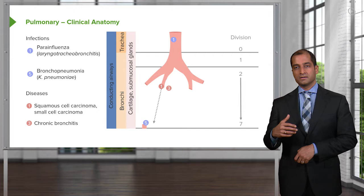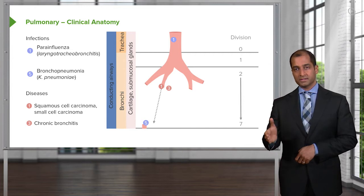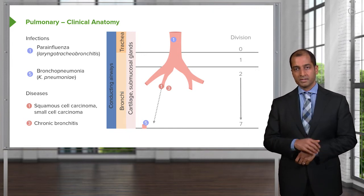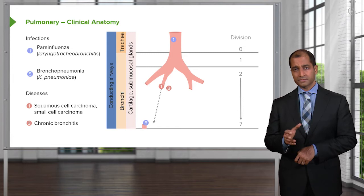So, instead of memorizing this, well, you should already know from anatomy to sequence. And so, what am I referring to? What is this? It's parainfluenza. This is going to be your croup, isn't it? So, your croup has your type of cough to it.